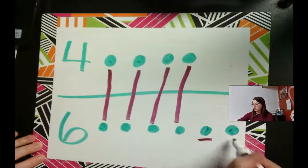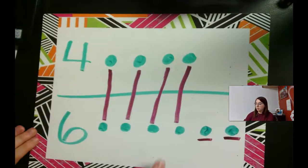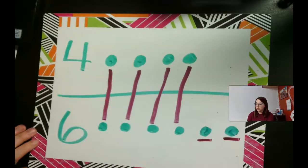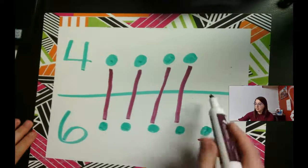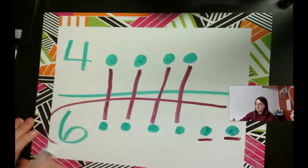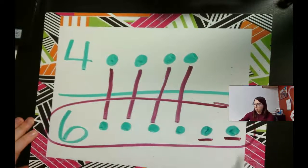And we have two dots left over. So we know that when there's a group of dots left over in one of the sets that that set is bigger. So that means six is more than four.